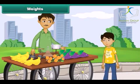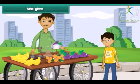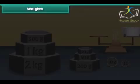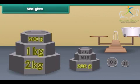When we go to a fruit seller, he uses different types of weights to balance the required amount of objects. Some weights used to measure are 2 kg, 1 kg, 500 grams, 200 grams, 50 grams, 20 grams, 10 grams, and 5 grams.